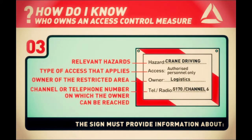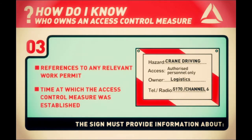The sign must also provide the channel or telephone number on which the owner can be reached. The sign may also provide information such as references to any relevant work permit, and the time at which the access control measure was established.